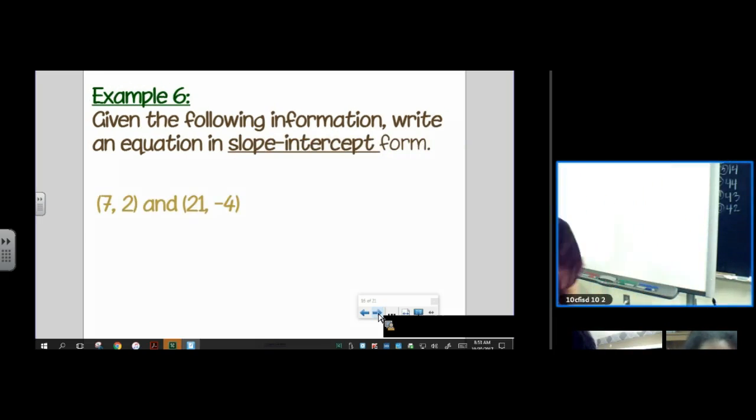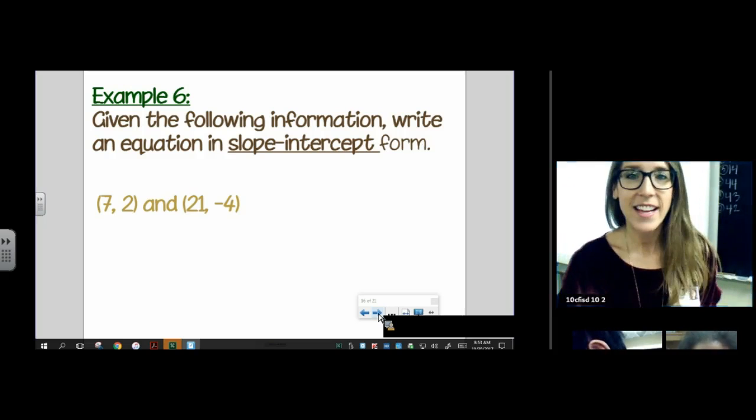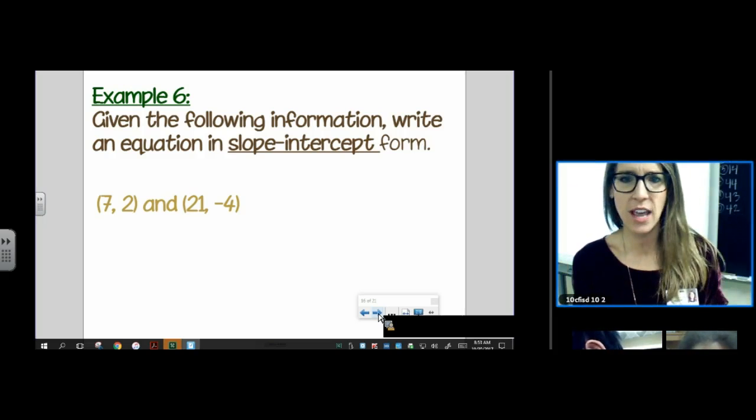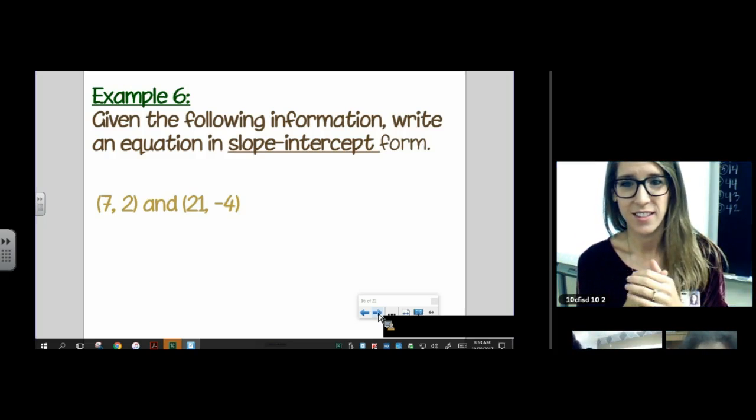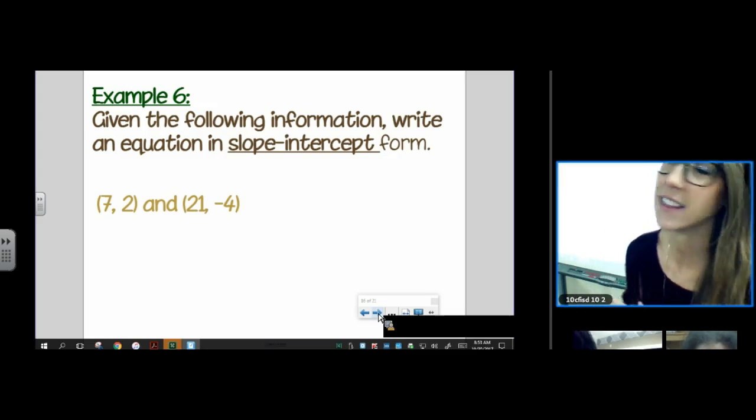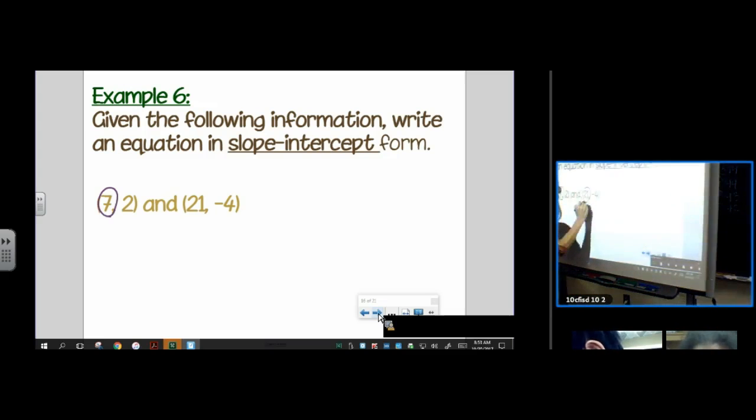Okay, given the following information, write an equation in slope-intercept form. This one's a little different. They didn't give us a point and a slope. They just gave us two points. So what do we need to do first? We need to find a slope. Good thing we had a lesson on slope last week. I'm going to circle my x's and underline my y's. We know slope is delta y divided by delta x. So I'm going to do y minus y divided by x minus x.